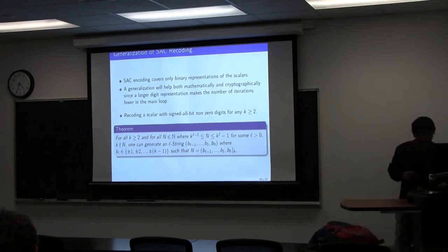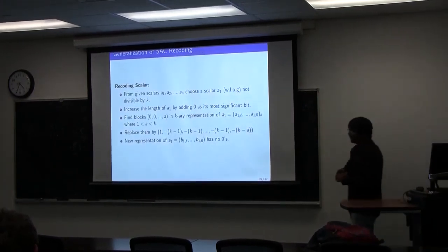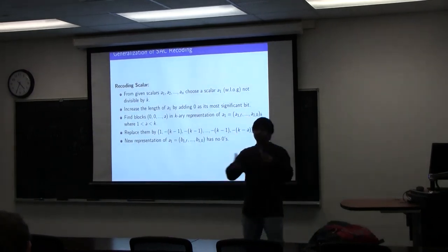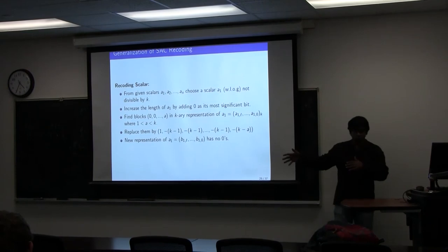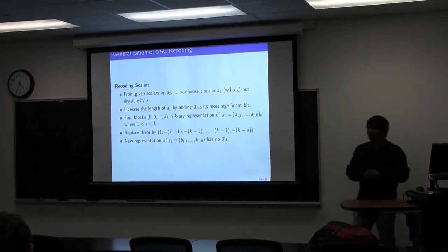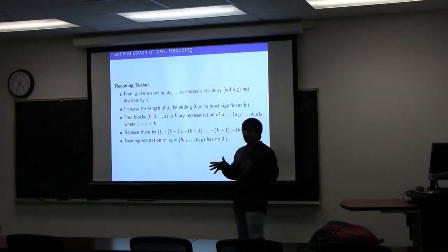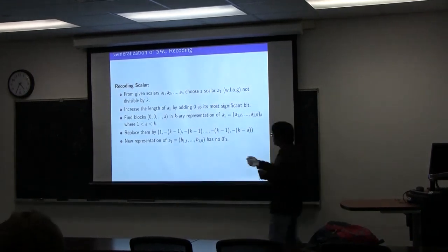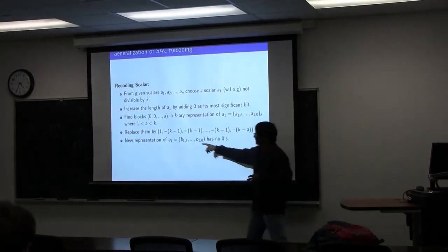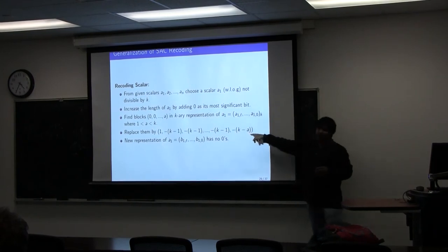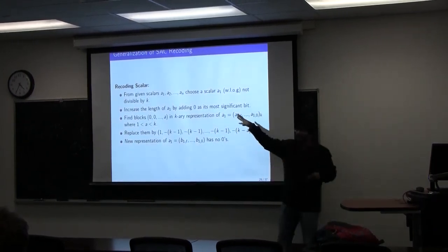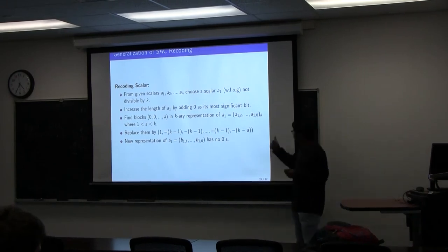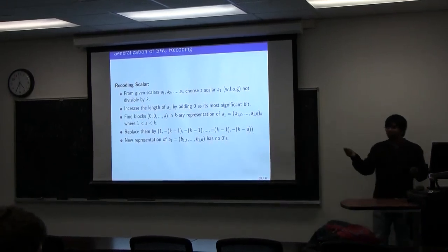We look for bad blocks, which now depend on K. If K=3, bad blocks can be (0,0,0,1) or (0,0,0,2); if K=4, bad blocks include (0,0,1), (0,0,2), (0,3), and so on. Whenever we see a bad block, we replace it with the good block: (1, −(K−1), −(K−1), ..., −(K−A)), where A runs from 1 to K−1. For K=3, A can be 1 or 2; for K=4, A can be 1, 2, or 3.